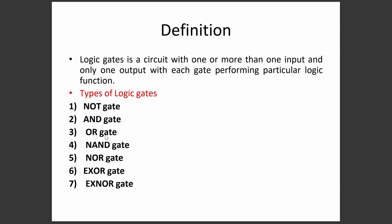The types of logic gates are: NOT, AND, OR, NAND, NOR, XOR, and XNOR. NOT performs complementation, AND performs logical multiplication, OR performs logical addition, NAND is a complement of AND, NOR is a complement of OR, and XOR and XNOR are special function gates. In total there are seven logic gates. NOT, AND, and OR are the basic gates; NAND and NOR are the universal gates; XOR and XNOR are the special function gates.